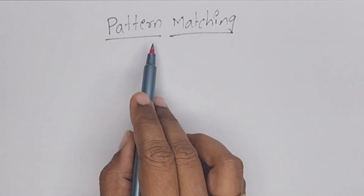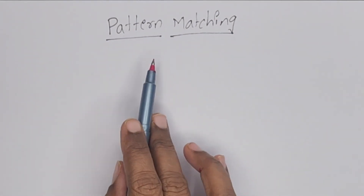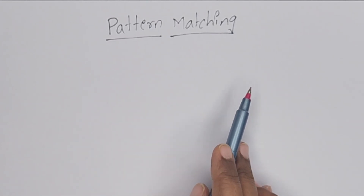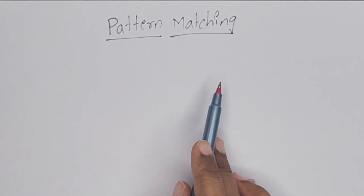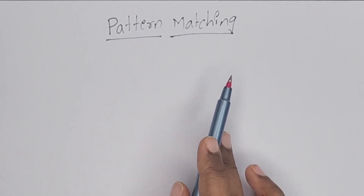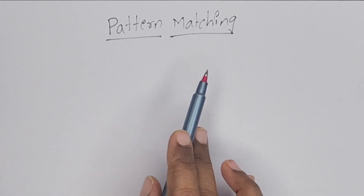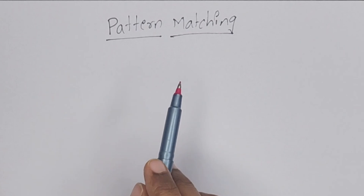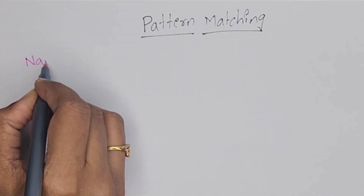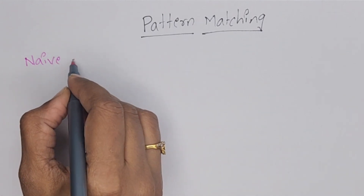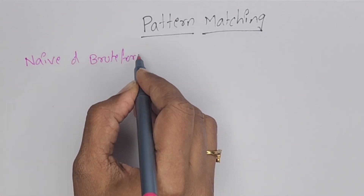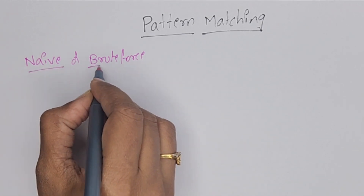Topic is pattern matching. Pattern matching means: given a pattern, is it present in a large string? We have to find out if it is present, and in which position or location the pattern is present in the string. There are different pattern matching algorithms. The basic algorithm is the Naive algorithm, or brute force. This is the basic pattern matching algorithm.